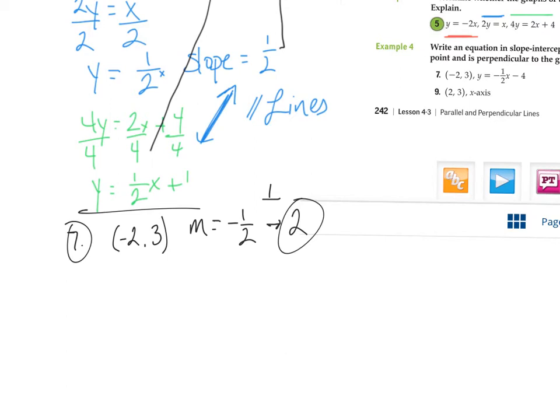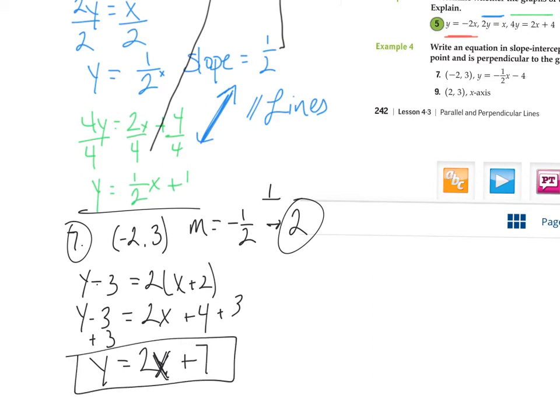So now it's y minus three equals my slope, x minus negative two, which I'm just going to write as x plus two. And let's distribute that two. So two x plus four. And then we're going to move the three over by adding three. And here's my equation, two x, that's a great looking x, you're welcome, plus seven. Sweet, so there's that.